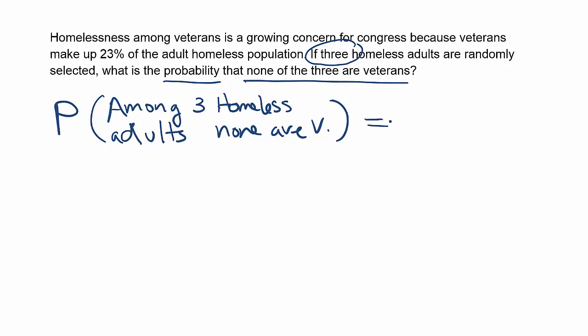That number three tells me how many fractions or probabilities I will need. So I'm going to draw three spaces to hold those probabilities, because there are essentially three things occurring in the problem. I'll randomly select one homeless person and find out if they're a vet or not, then select another one, and then finally another one. Each space here holds a probability corresponding to each of those outcomes.